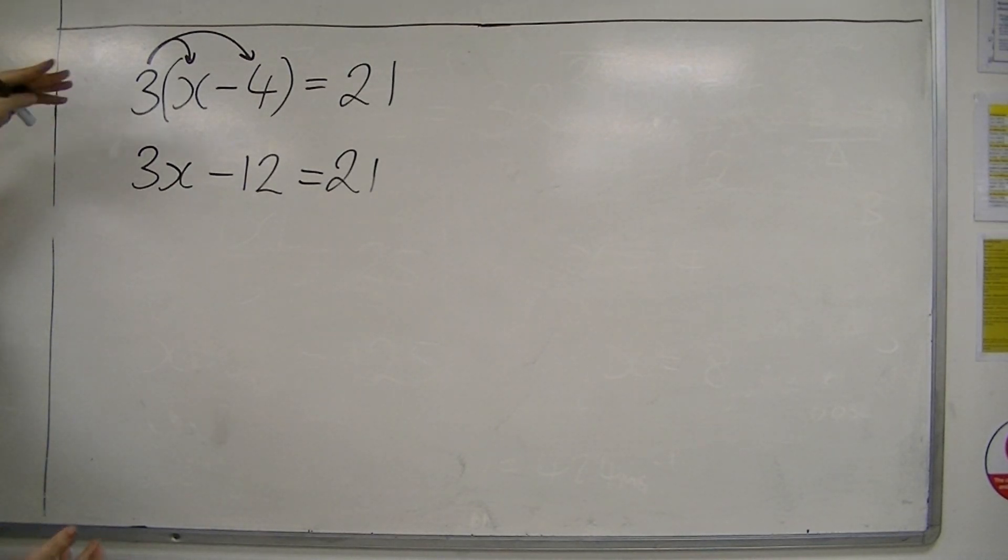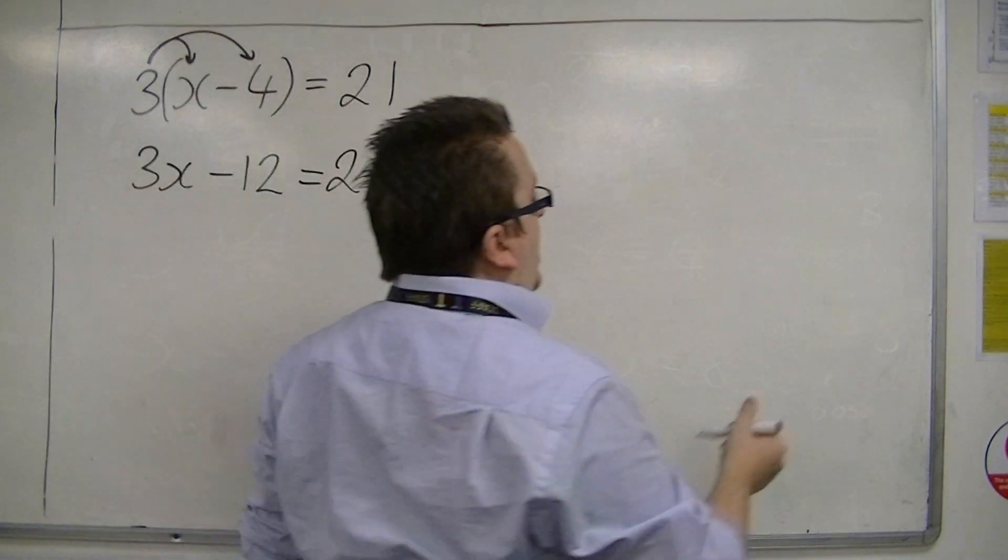Now, this has turned this equation into a two-step equation. So now, we're working with bit maths backwards.